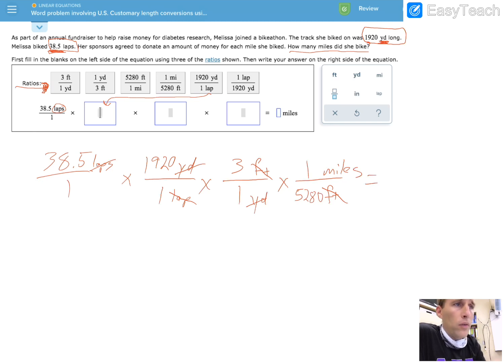So now all I have to do is use the Alex calculator over there and check it out, plug these in. And if I multiply 38.5 times 1,920 times three, and then divide all of that by 5,280, I'm going to get my answer of 42 miles.